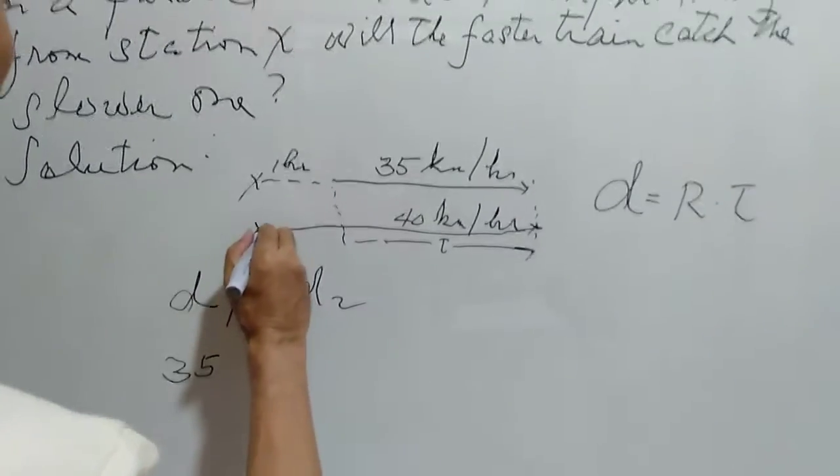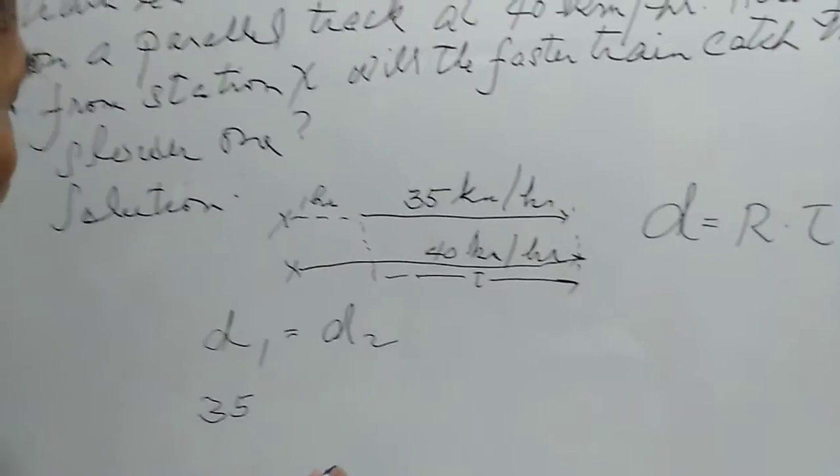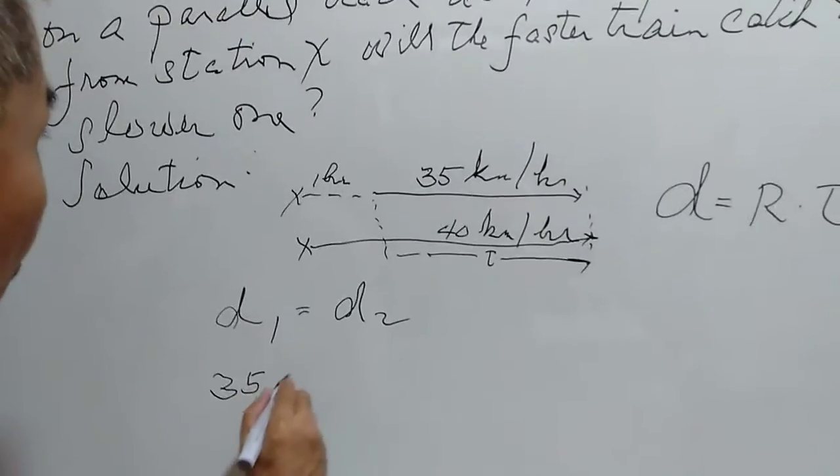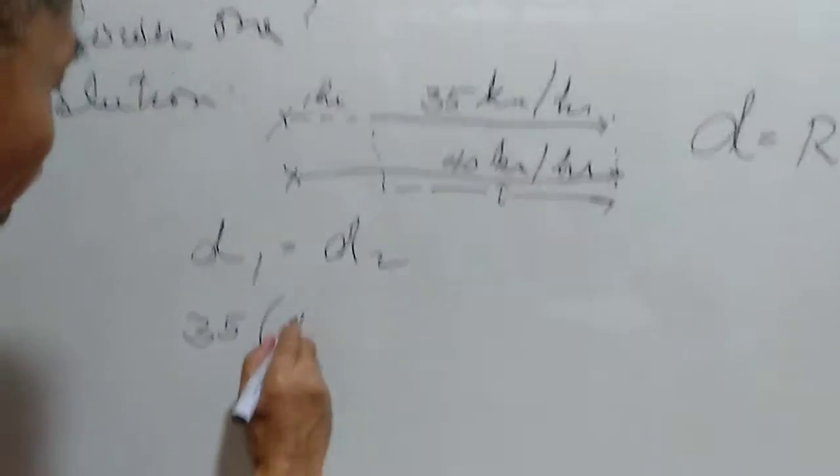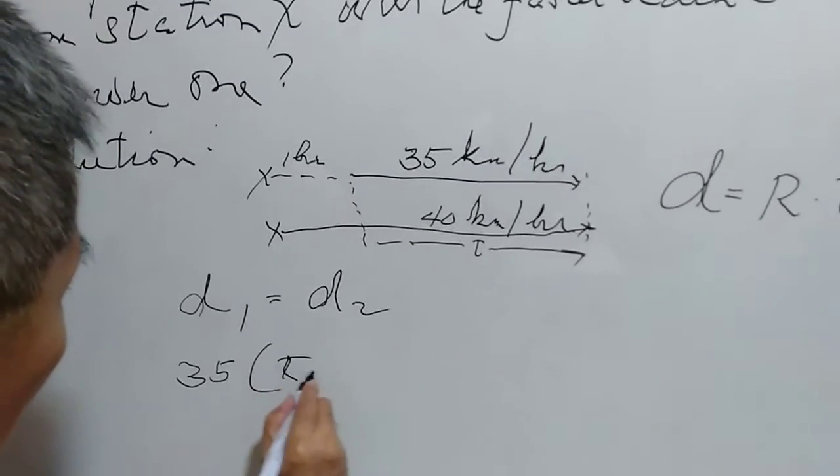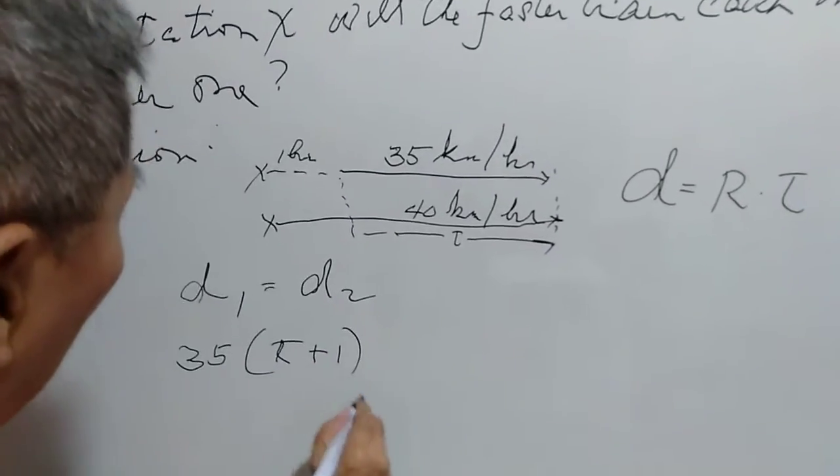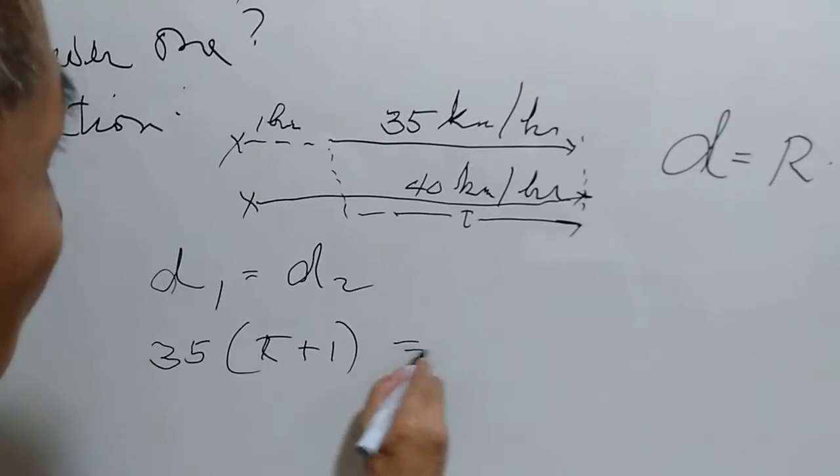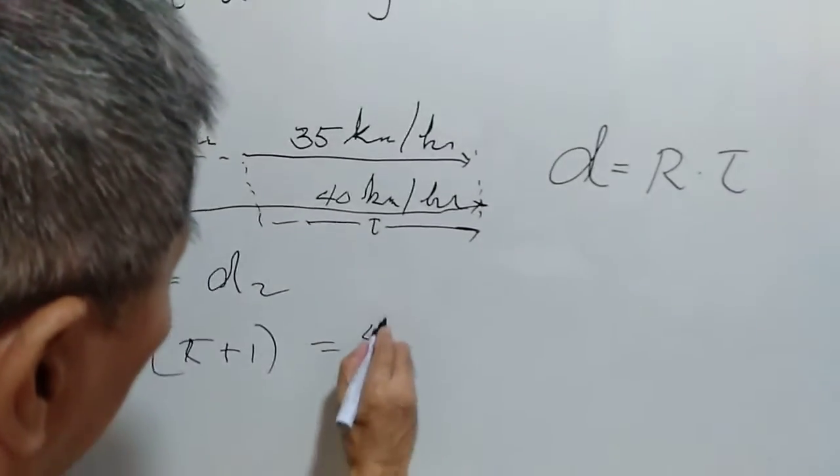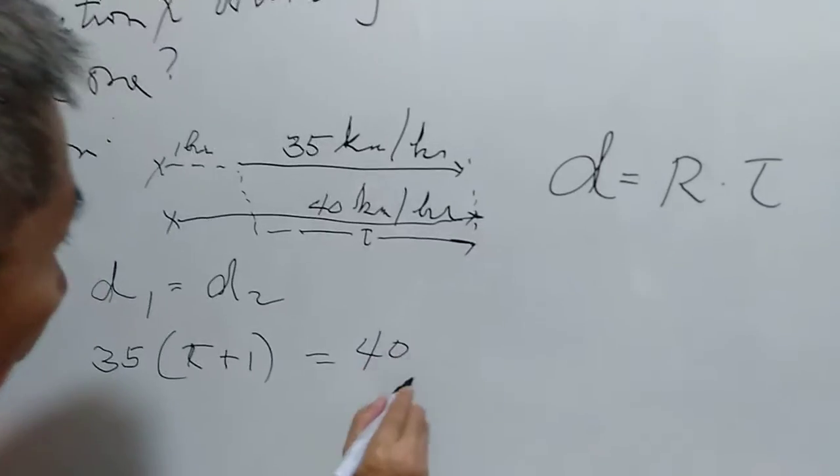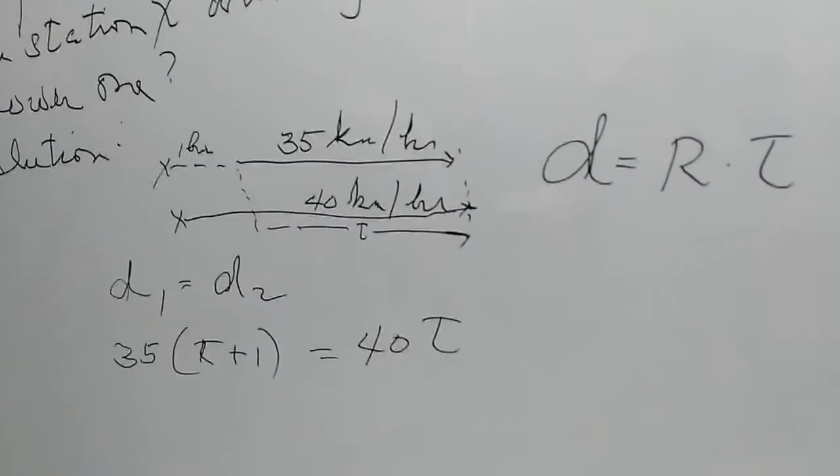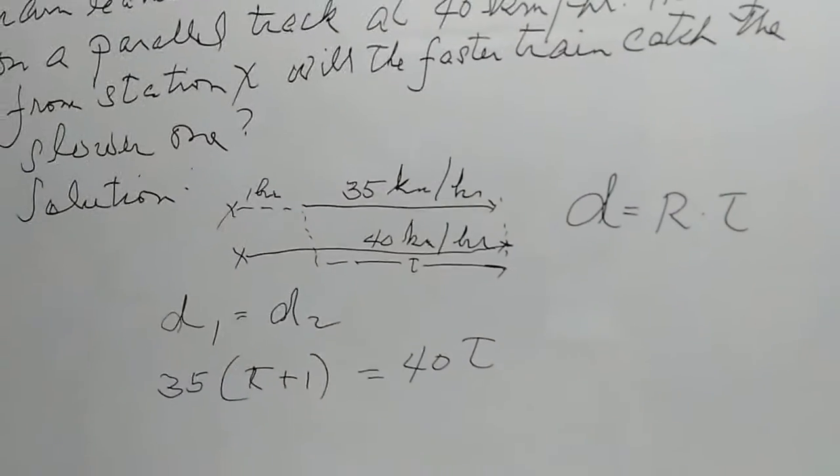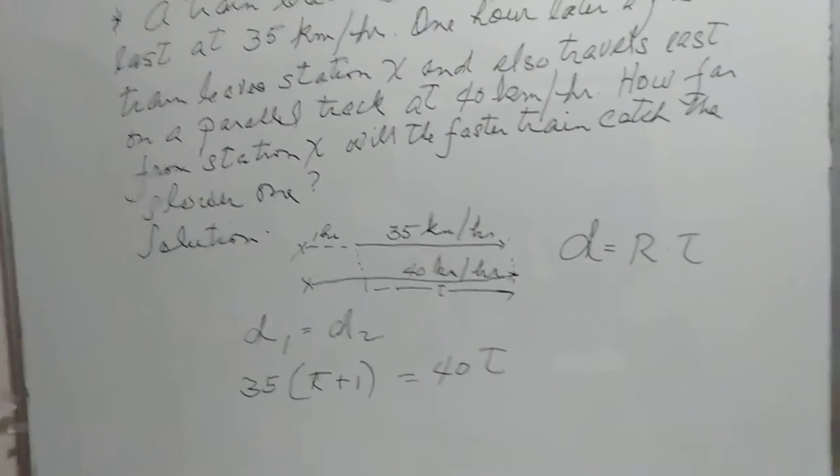The time traveled is 1 plus T, or T plus 1. So that is equal to the distance, 40 kilometers times T. So let's see.